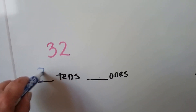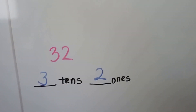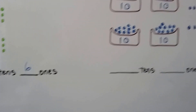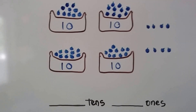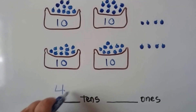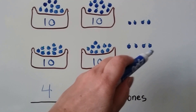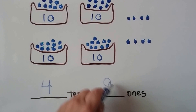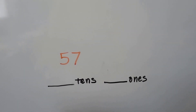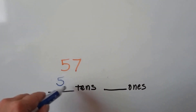How many tens and ones are here? We have a three in the tens place and a two in the ones place — that's 32. How many tens and ones are here? We have one, two, three, four tens, and we have one, two, three, four, five, six, seven, eight ones.